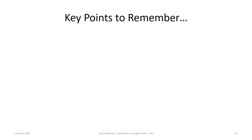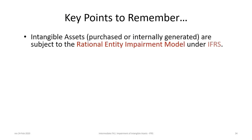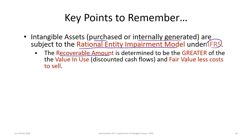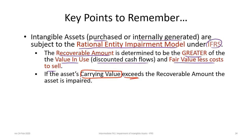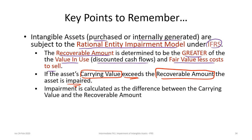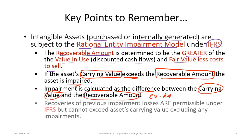For key points to remember: intangible assets, whether purchased or internally generated, are all subject to the rational entity impairment model under IFRS. The recoverable amount is the greater of value in use (discounted cash flows) and fair value less cost to sell. If the asset's carrying value exceeds the recoverable amount, the asset is impaired and we calculate impairment as the difference between the carrying value and the recoverable amount. Finally, recoveries of previous impairment losses are permissible under IFRS, but they cannot exceed the asset's carrying value excluding any impairments.